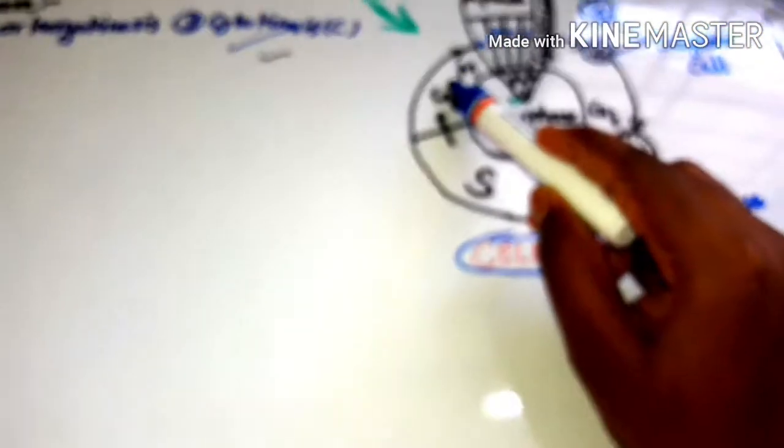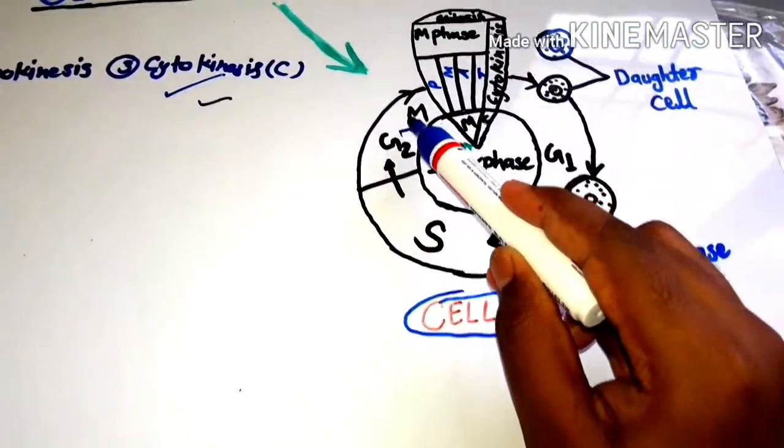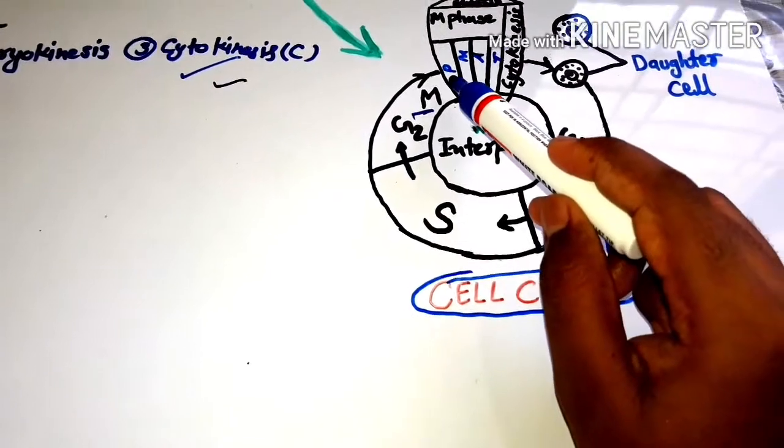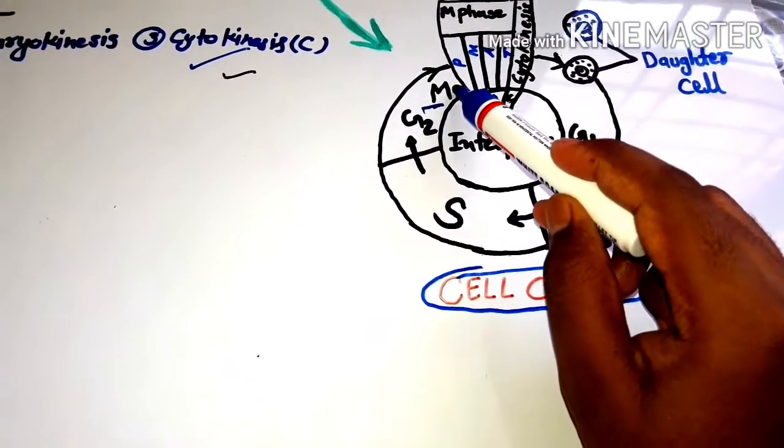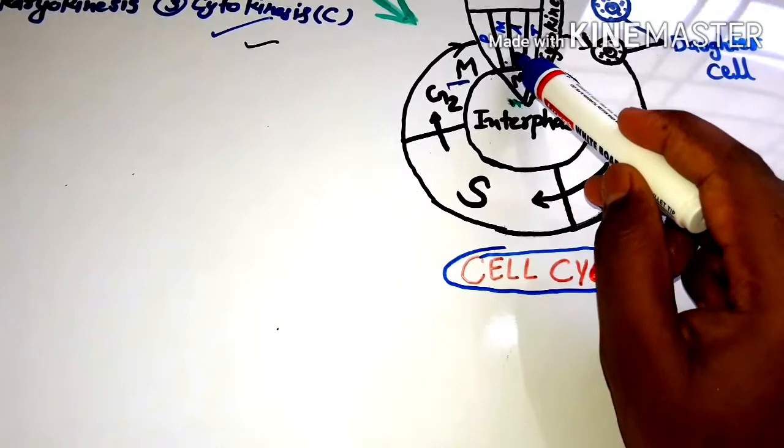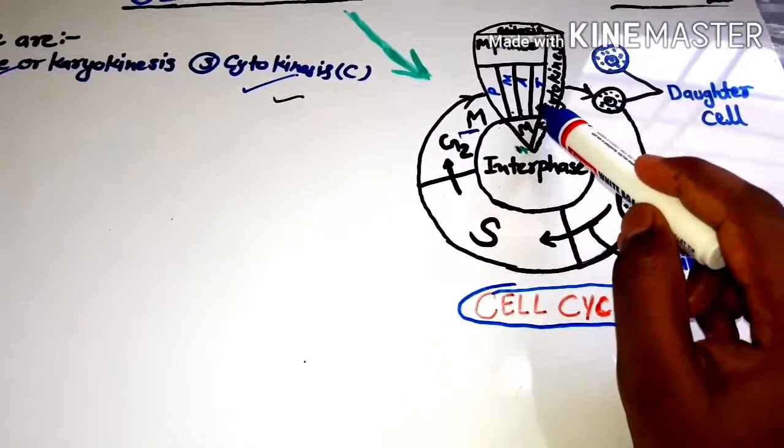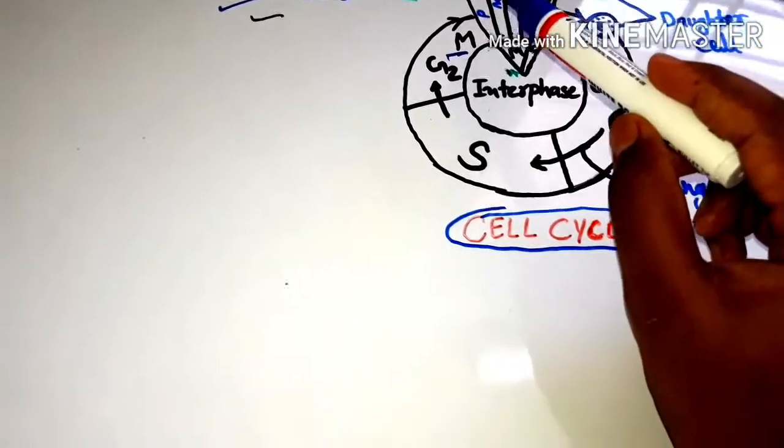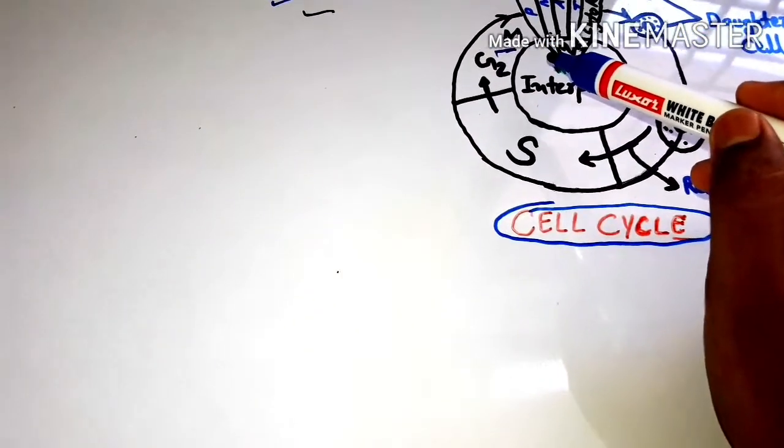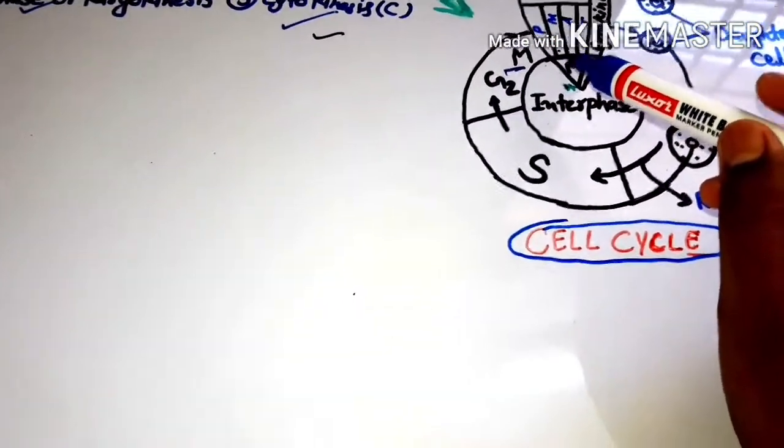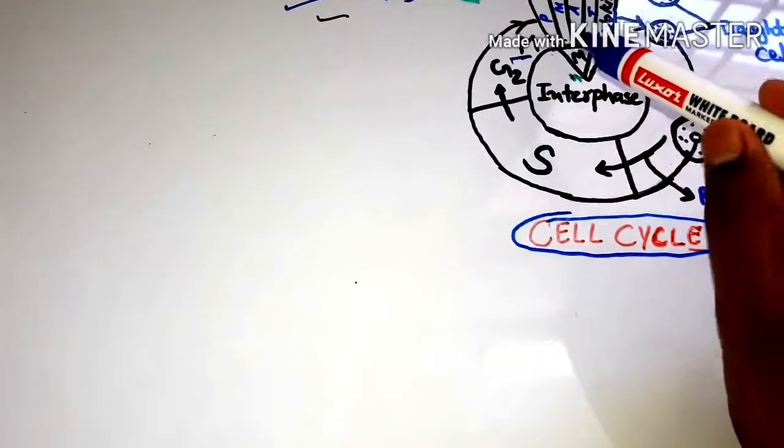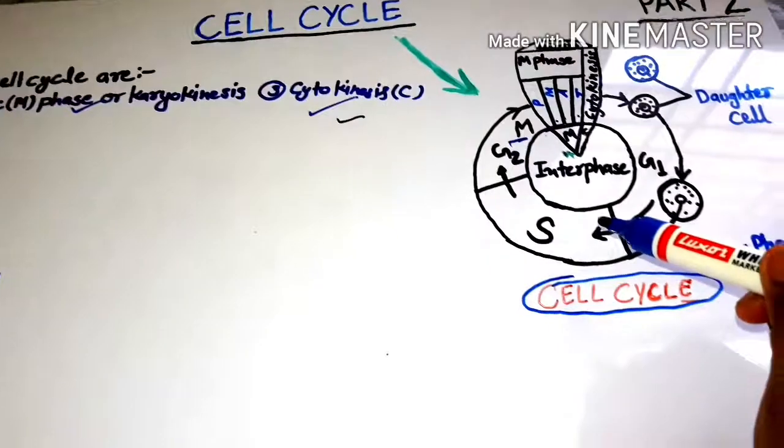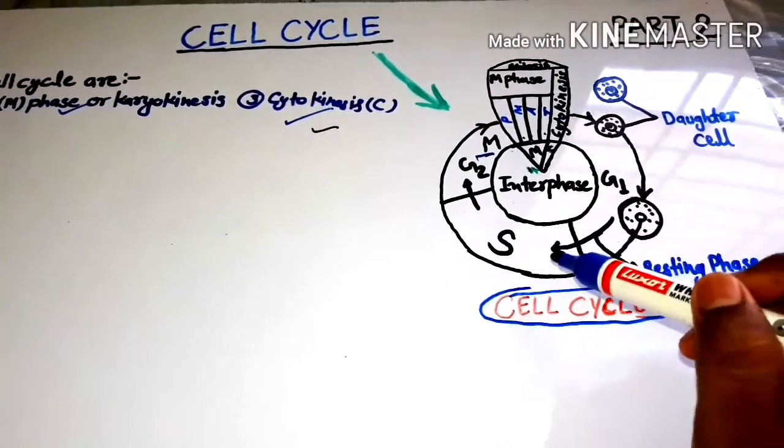M phase is PMAT, which means prophase, metaphase, anaphase, telophase, and then cytokinesis. You understand? The cell goes through this basic cell cycle. So like, share, and comment as much as possible.